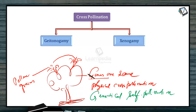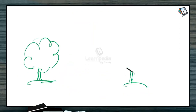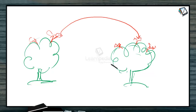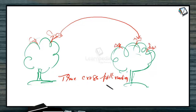Xenogamy means: here is one plant and here is another plant of the same species, each bearing flowers. The pollen grains produced on one plant are transferred to the stigma of another plant. This is true cross-pollination — both physical and genetical cross-pollination. So this type of cross-pollination is called xenogamy.